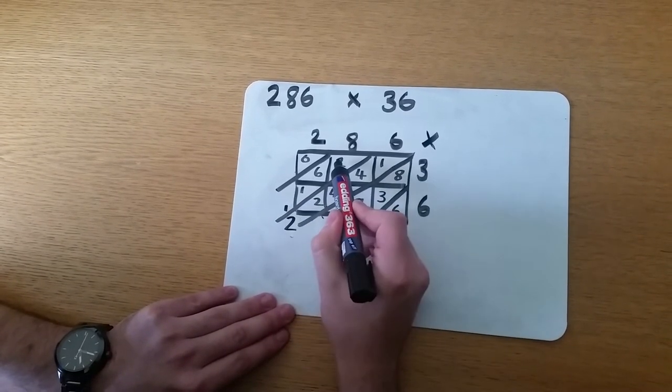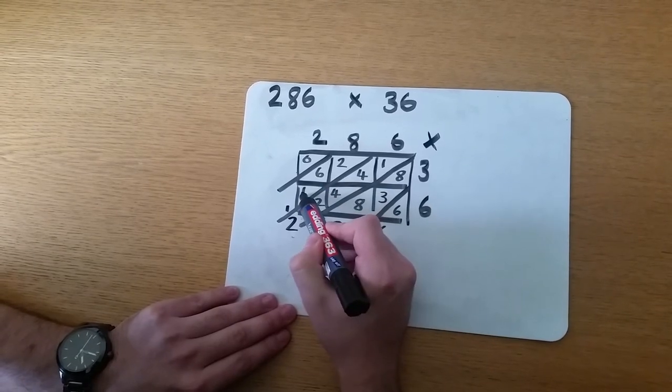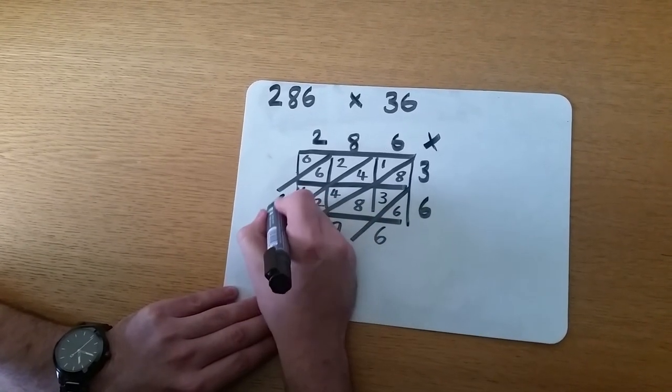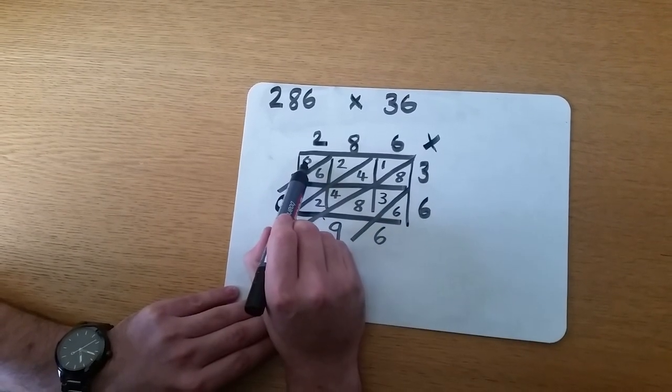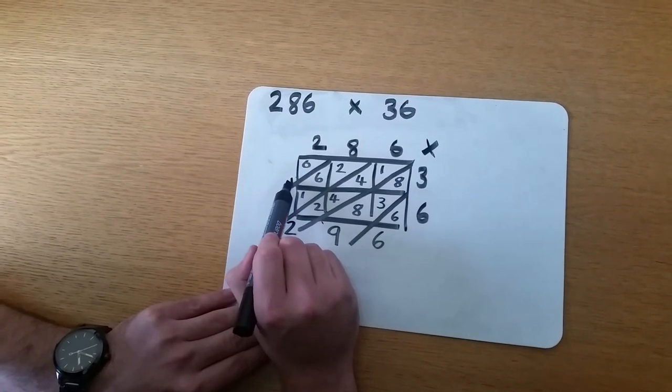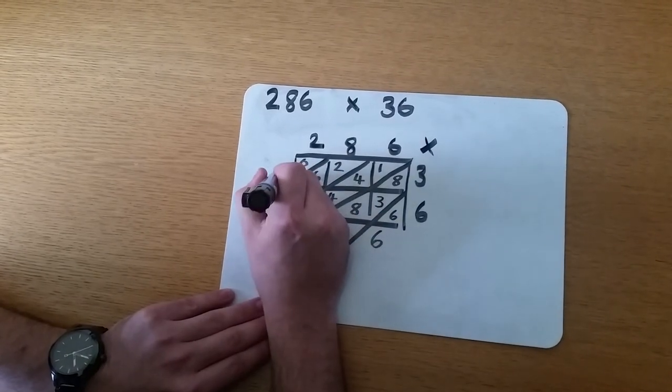The next diagonal, 2 add 6 is 8, add this 1 is 9, add this 1 here is 10. Since there's a 0 at the top, we don't have anything to add except for this 1 here. So that gives us 1.